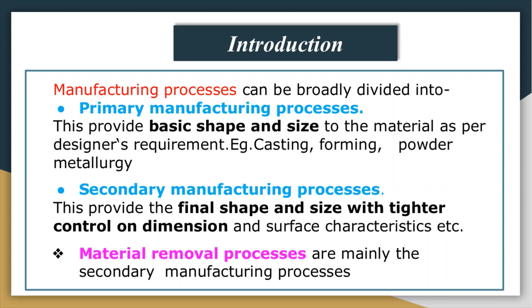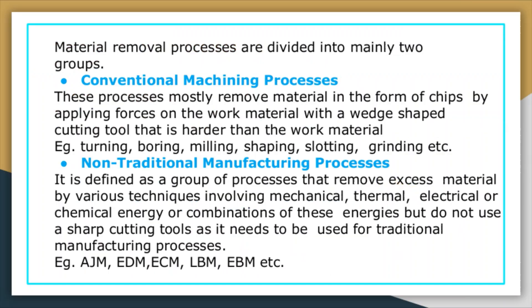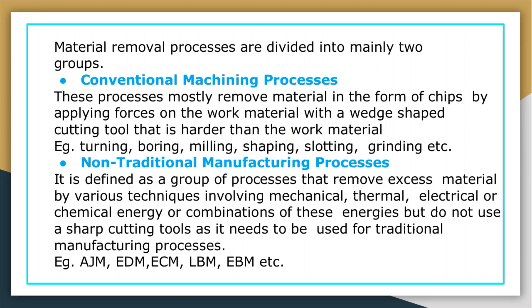Material removal processes belong to the secondary manufacturing process group, and are again divided into two groups: first is conventional machining processes, and second is the non-traditional or non-conventional machining processes. In conventional machining, material is mostly removed in the form of chips by applying forces on the workpiece with an edge-shaped cutting tool that is harder than the workpiece. Examples include turning, boring, milling, shaping, slotting, and grinding.